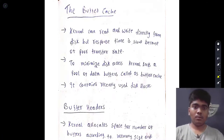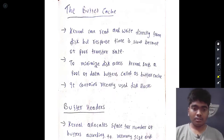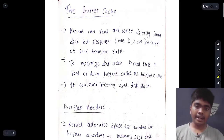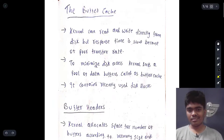What is buffer cache? Basically, the kernel can read and write data directly from the disk. The disk is the physical storage device. However, the response time is slow because of a poor transfer rate.